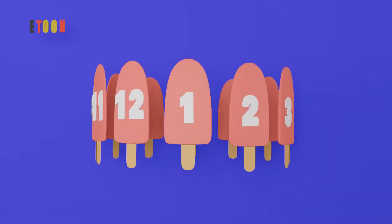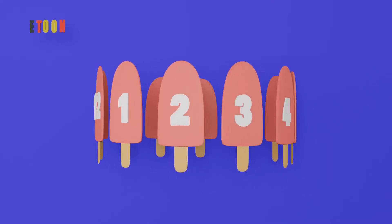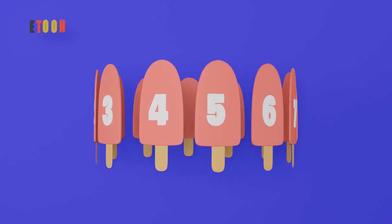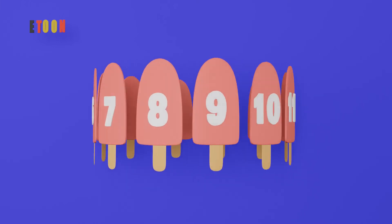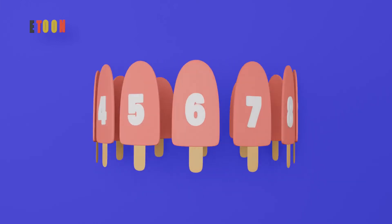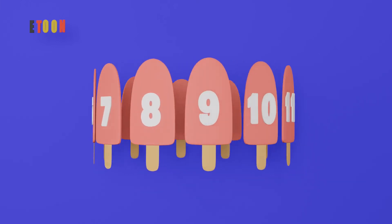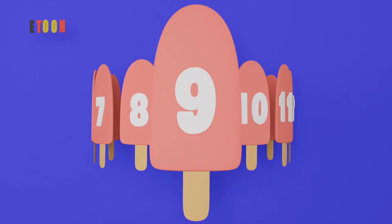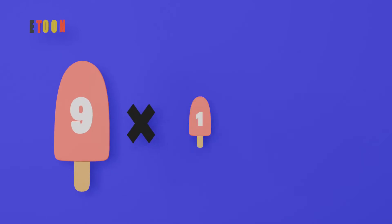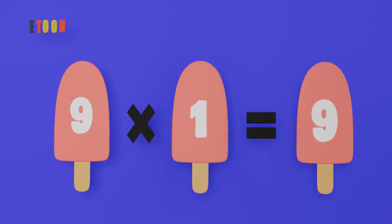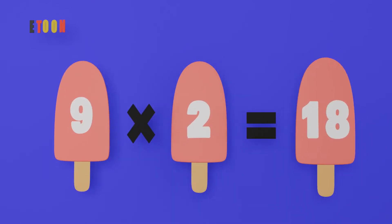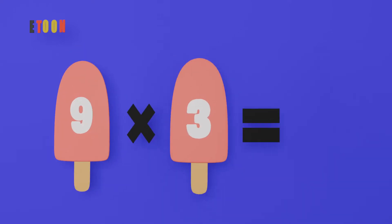E-T-O-O-N! Let's learn, let's learn, let's learn the multiplication table of 9. 9 times 1 is 9, 9 times 2 is 18, 9 times 3 is 27.